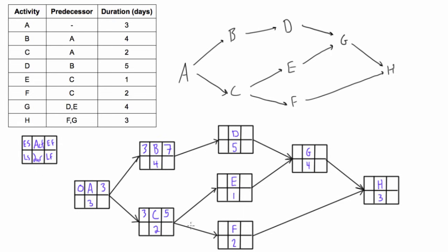We bring seven into D, and seven plus five is twelve. We can't fill in G yet because there are two arrows coming in and we pick the larger value. For E: we bring five up, five plus one is six. The twelve wins for G because G depends on both E and D — it can't start until both are done. E finishes at day six but D finishes at day twelve, so we wait until the end of day twelve. We bring twelve in, add four, and get sixteen.